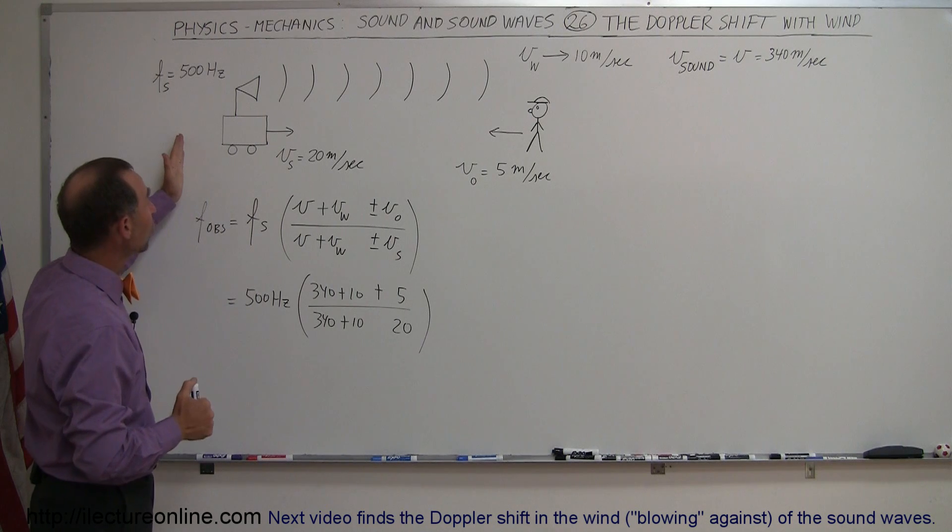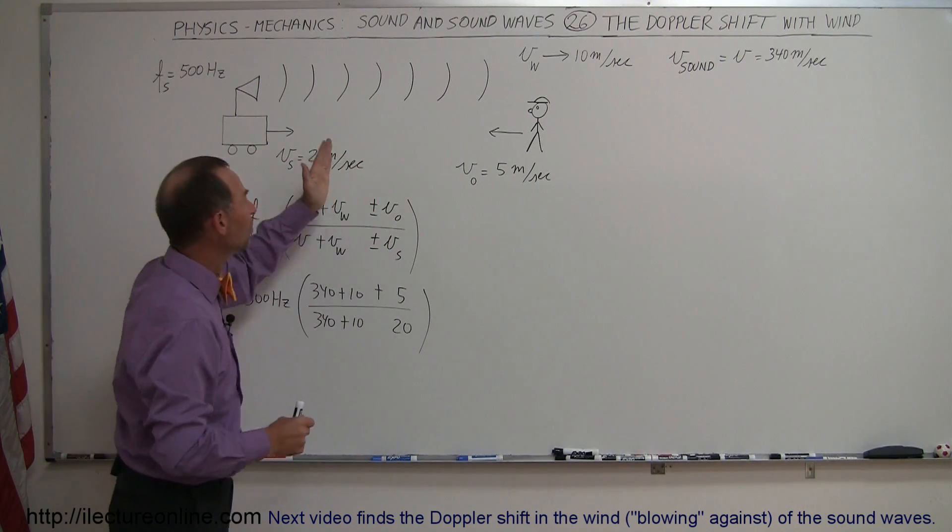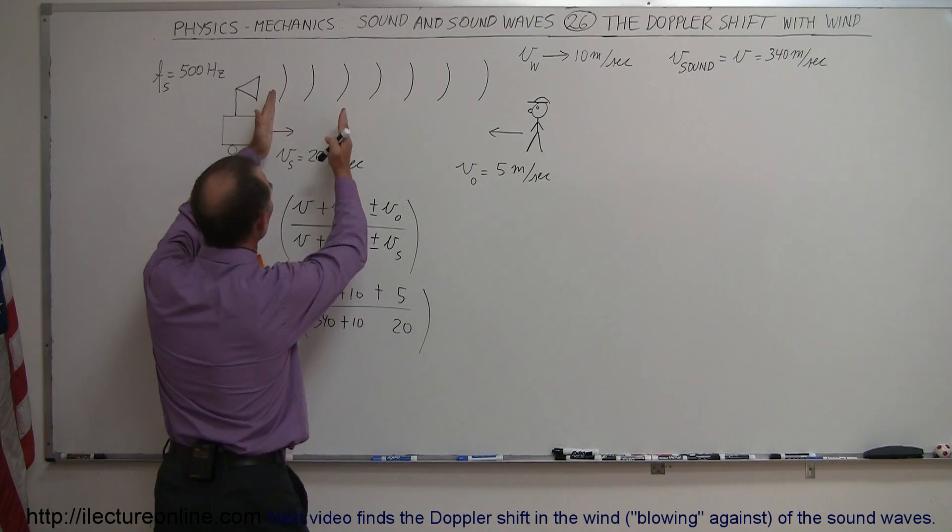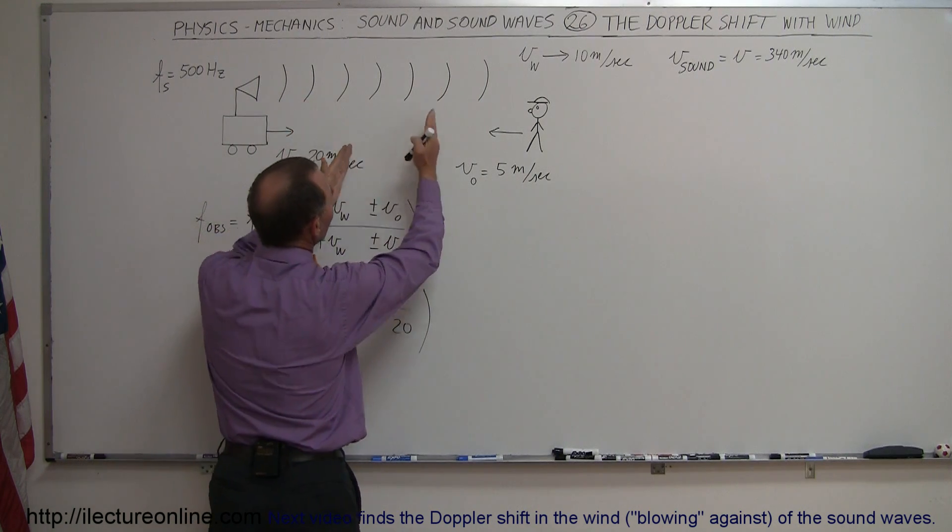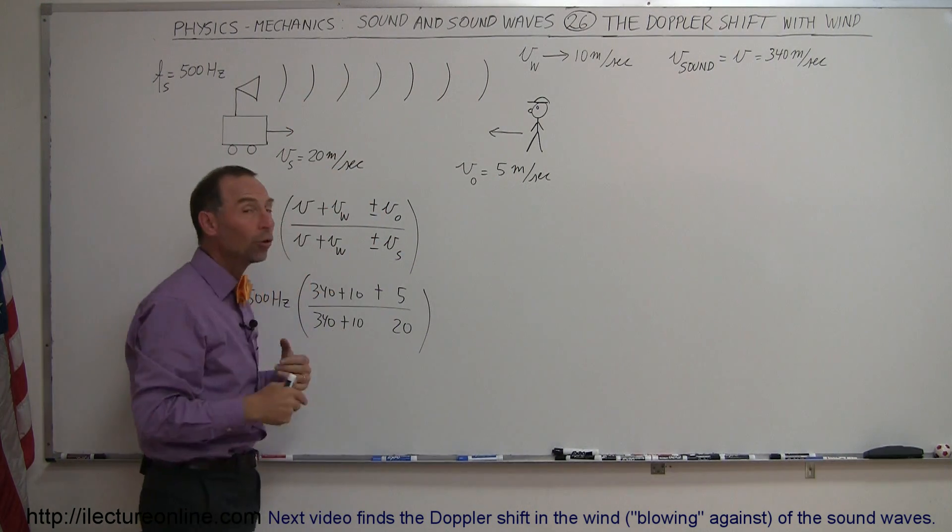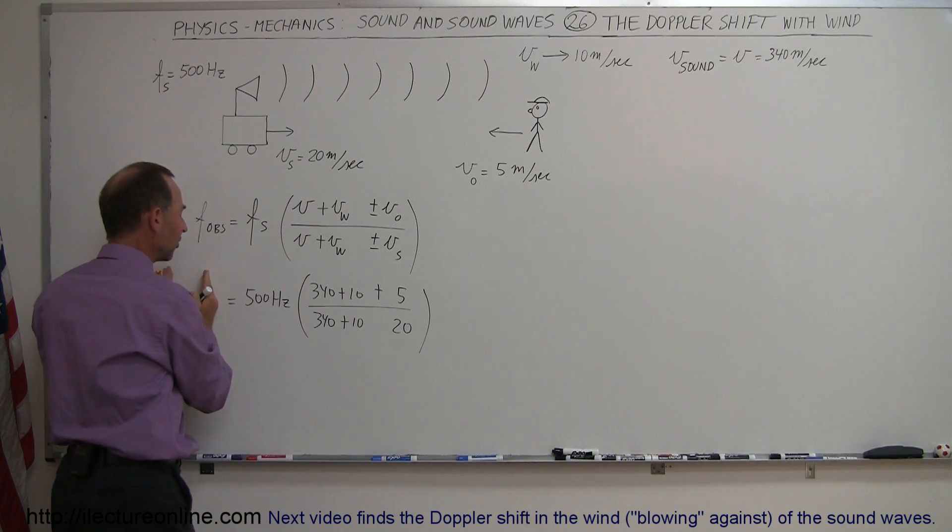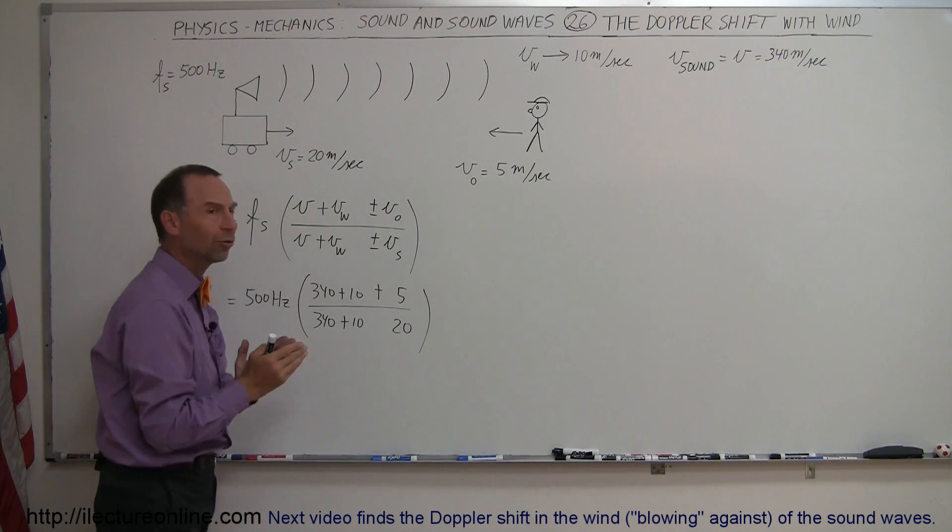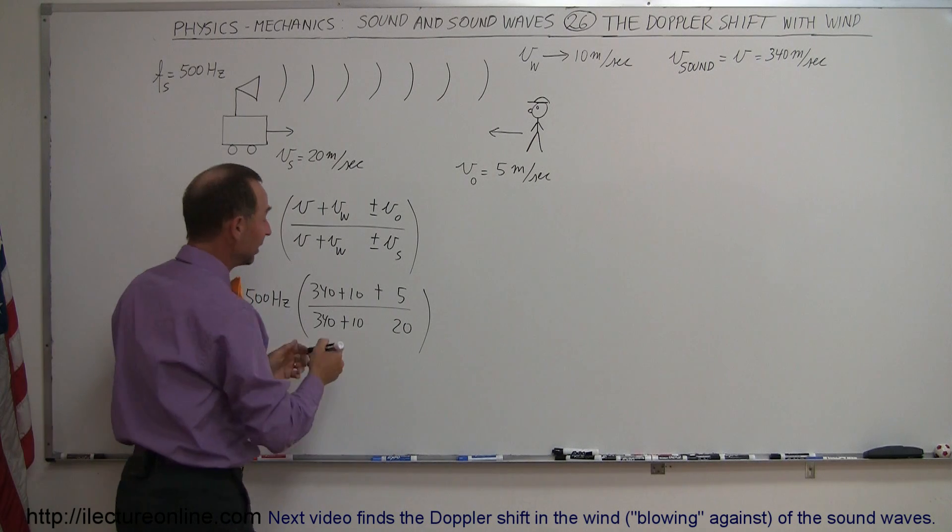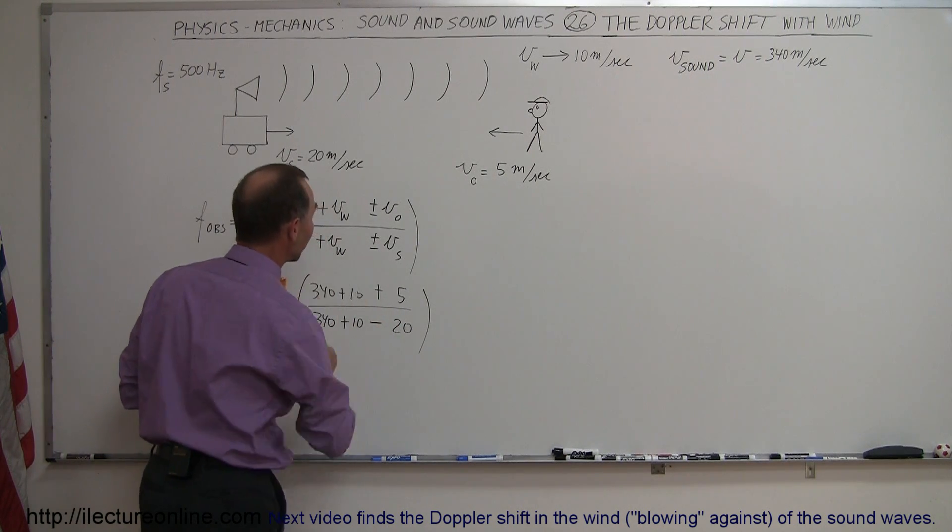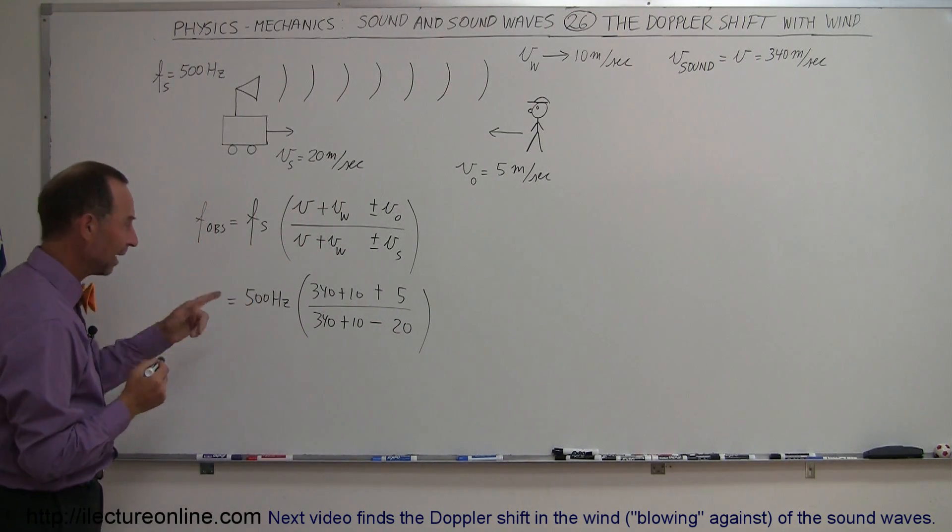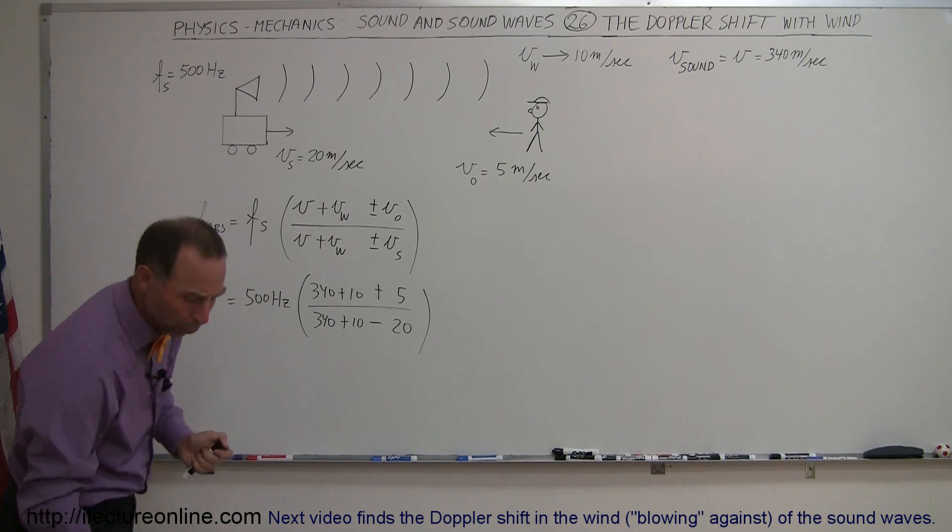At the same time, the source is moving towards the observer, which means that the waves will be coming quicker or closer together, which means that the frequency observed by observer also will be higher. But this is in the denominator to have a higher frequency here. What does the denominator have to do? It has to become smaller, and therefore we need to subtract the velocity of the source. And that should give us the correct velocity with the wind.